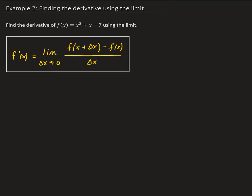In this example, we want to find the derivative of the following function using the limit definition shown in this box. The first thing we need to do is find the expression for f of x plus delta x. So f of x plus delta x is going to be x plus delta x squared plus x plus delta x minus 7. All we did was replace the x with x plus delta x.